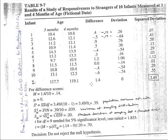That gives us an average difference score of 0.14, indicating that on average, children at four months old scored 0.14 higher than they did at three months old. Once we generate that, we then subtract that mean from each one of the difference scores, because we're trying to get a sense of how far on average scores spread out around this mean difference.